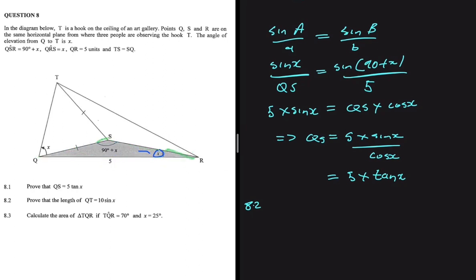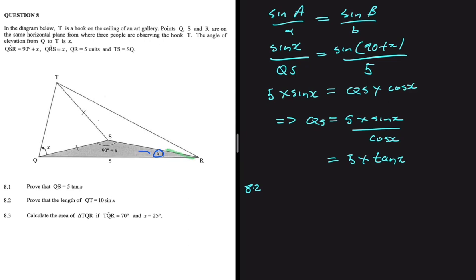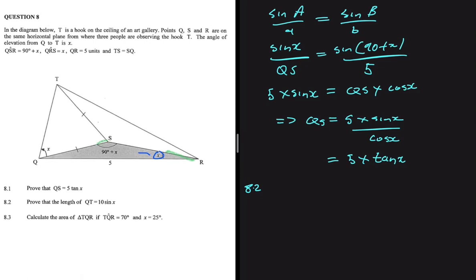Moving to 8.2, we need to prove that QT = 10 sin(x). We know QS = 5 tan(x), and from the sketch QS = TS, so TS = 5 tan(x) as well. Since the triangle is isosceles with QS = TS, if one base angle is x, the other is also x, making the apex angle 180 − 2x.